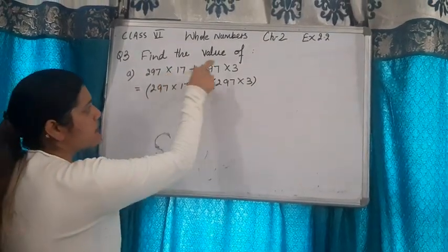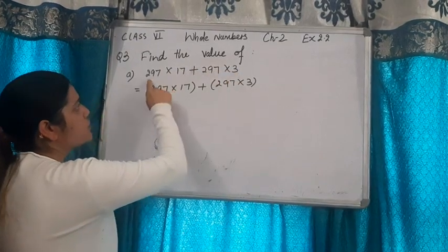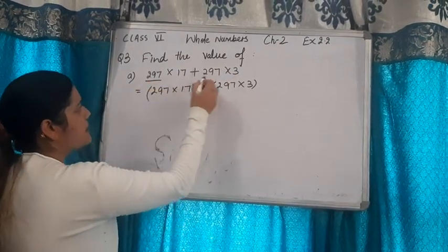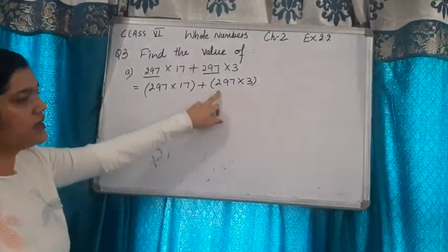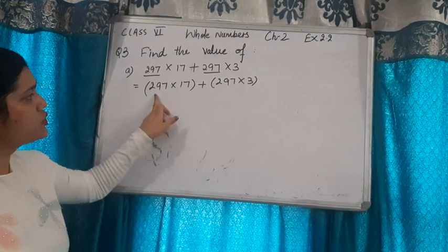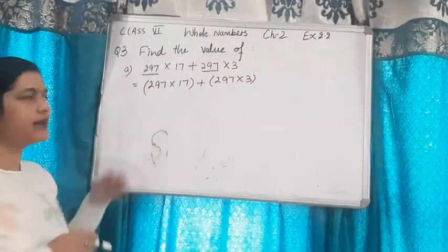When we have this number before plus and this number after plus, 297 is here and 297 is here also. In both we have 297, so we will take 297 as common.